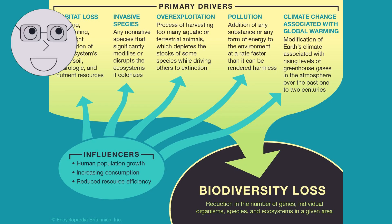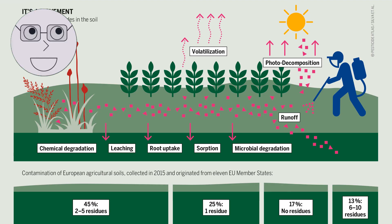Other threats to biodiversity include invasive species, poaching and habitat fragmentation. All of these factors contribute to the loss of biodiversity and the decline of species populations. The visuals show examples such as non-native plants taking over an ecosystem, illegal hunting of endangered species and roads cutting through wildlife habitats.